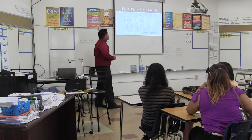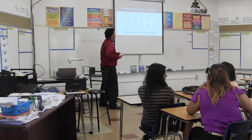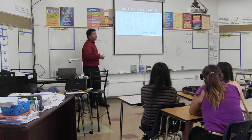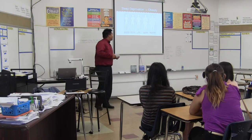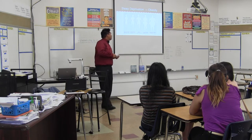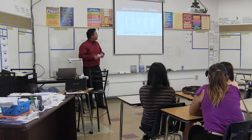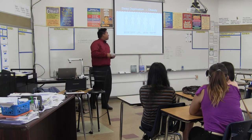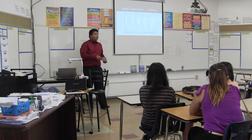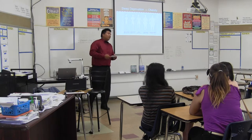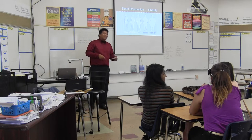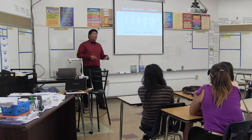Sleep deprivation leads to obesity. This is a picture of a BMI scale: 18.5 to 24.9 is normal weight, 25 to 29.9 is overweight, 30 to 34.9 is obesity, 35 to 39.9 is severe obesity, and 40 plus is morbidly obese. To find your own BMI, you would take your weight divided by your height times your height.